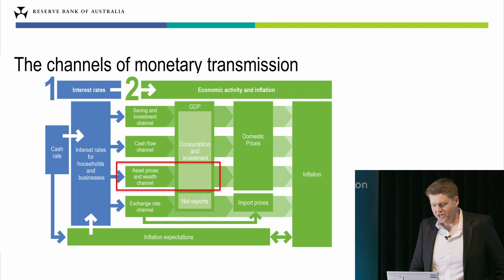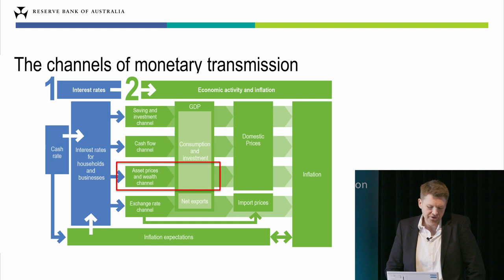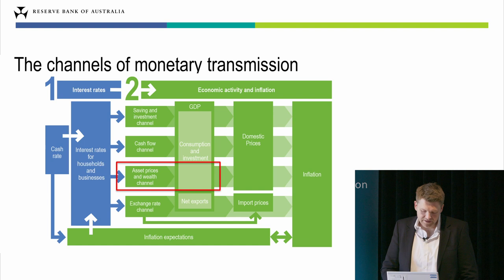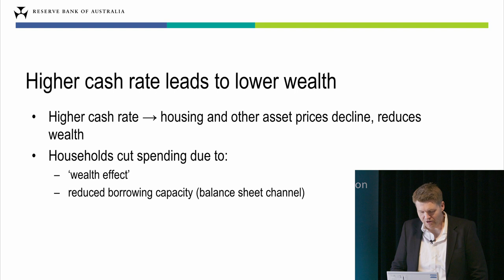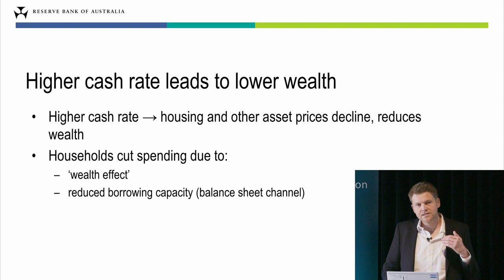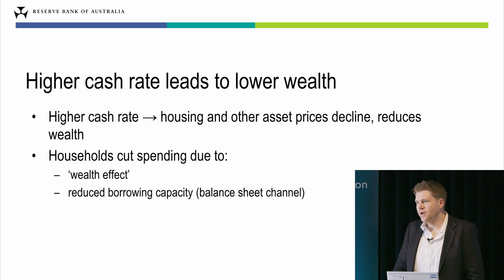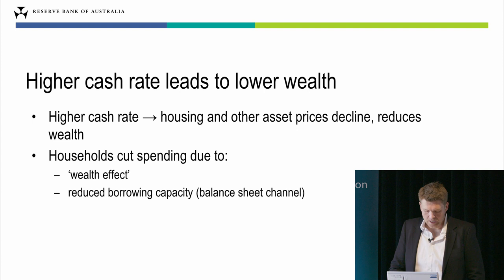The next channel is the asset price and wealth channel. Changes in the cash rate affect housing prices, equity prices, and other asset prices — particularly if those changes were unexpected. When we raise the cash rate, that will generally reduce asset prices, which goes on to affect how much households are spending. One mechanism is the wealth effect: when the value of your home or share portfolio goes down, you might cut back on how much you're spending, either because you have fewer resources or simply feel less wealthy.